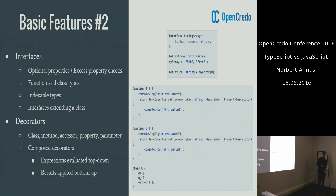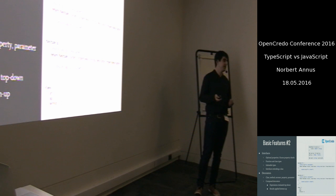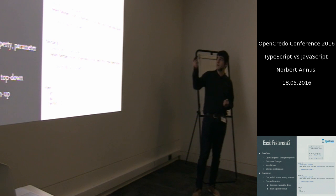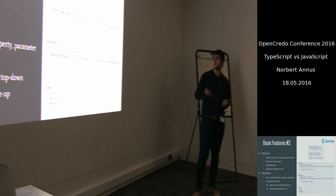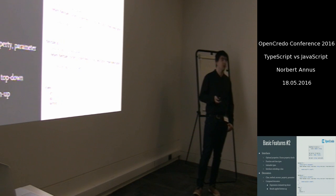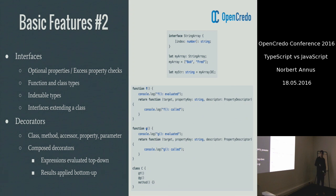Beyond basic stuff like function and class type interfaces, there is an interesting thing called indexable type, which can be seen in the top right corner. They are used for indexing into various constructs. In TypeScript, an interface can extend a class, which means that it inherits all of its members, but not their implementation.